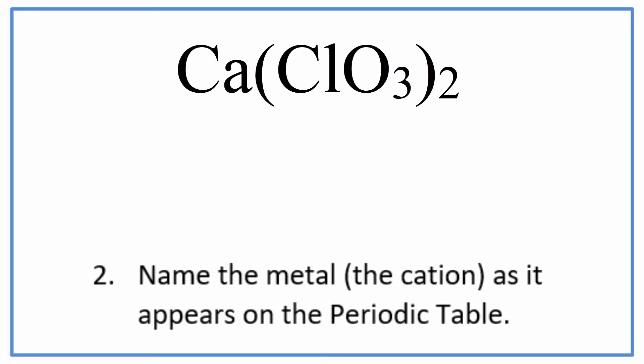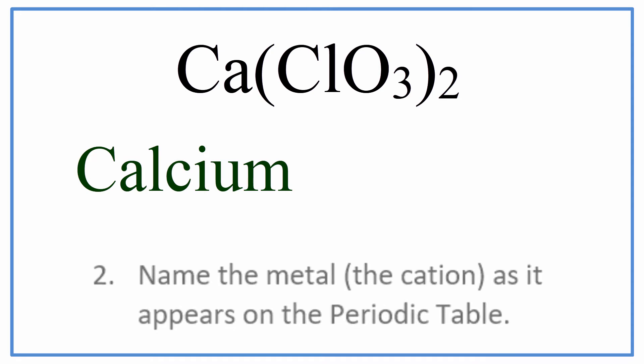Next, we write the name for Ca using the periodic table. For Ca, the name is calcium, and we write that just as it's found on the periodic table.